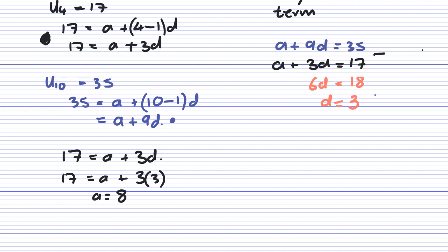So the first value in the term is 8. The pattern basically goes 8, add 3 is 11, add 3 is 14, add 3 is 17. Let's get the fourth term, and then we get 20, and so on.